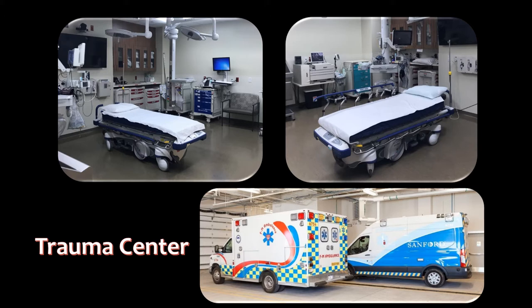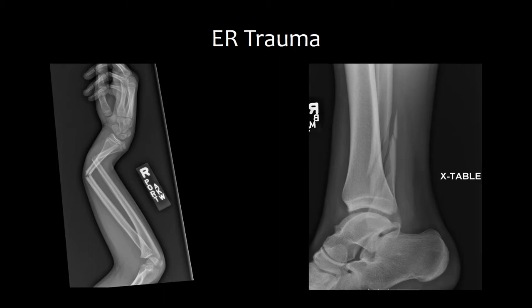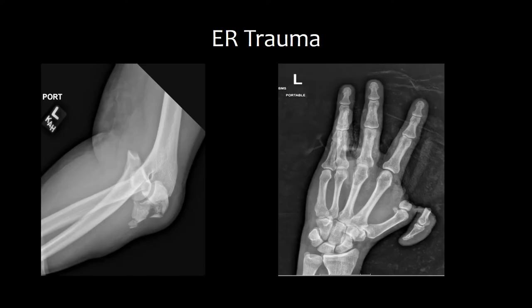When responding to trauma situations, some basic rules to follow include: 1. Do not panic. 2. Do no further harm. 3. Wear personal protective equipment such as gloves, gown, and a mask if necessary. The following images were obtained in trauma situations. Critical thinking skills are vital in the trauma setting. Technologists must think quickly about how to obtain images without causing further harm.